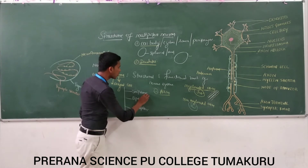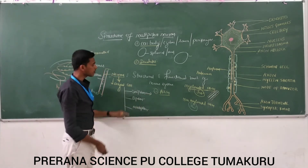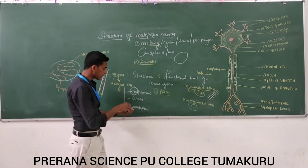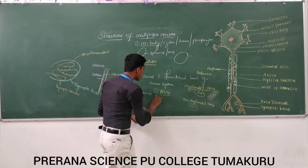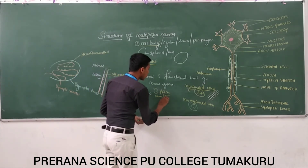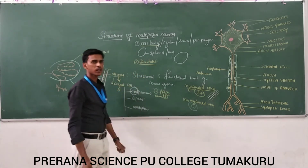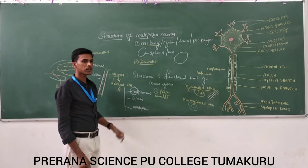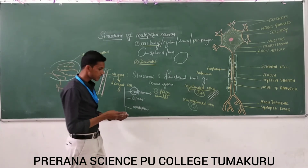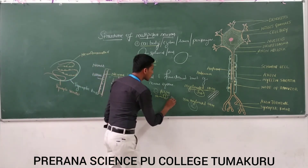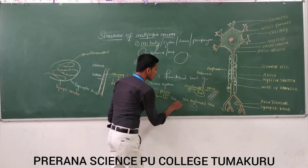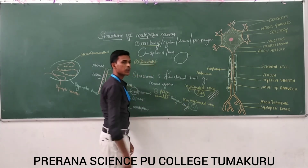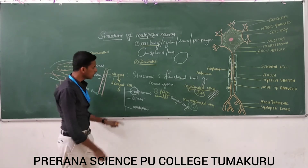So the name itself explains — uni means one. The unipolar neuron has only one axon. So where is it found? The unipolar neuron is found in the embryonic stage.